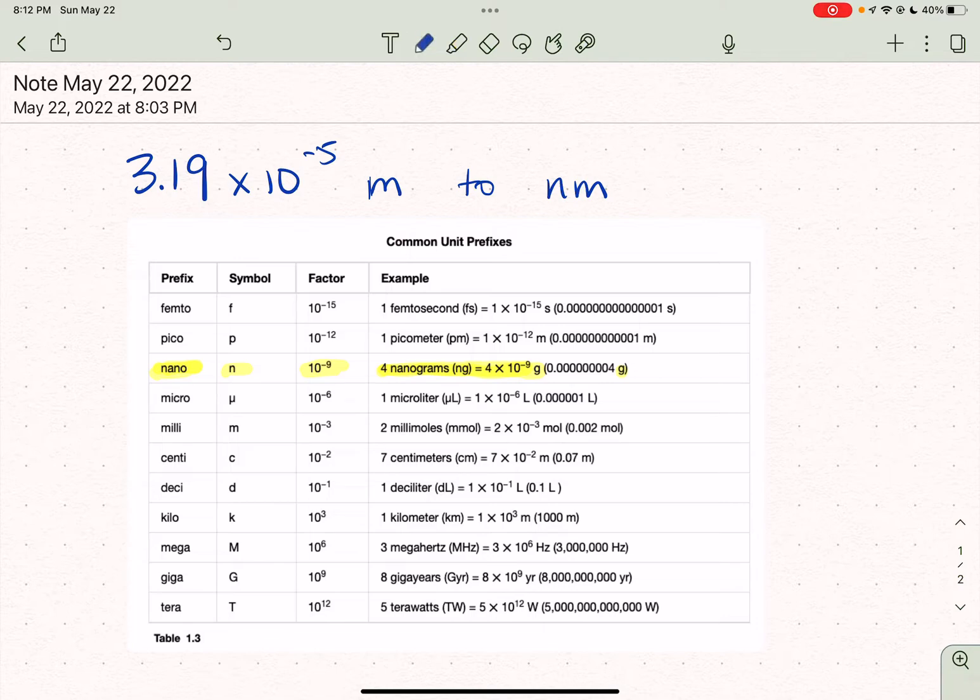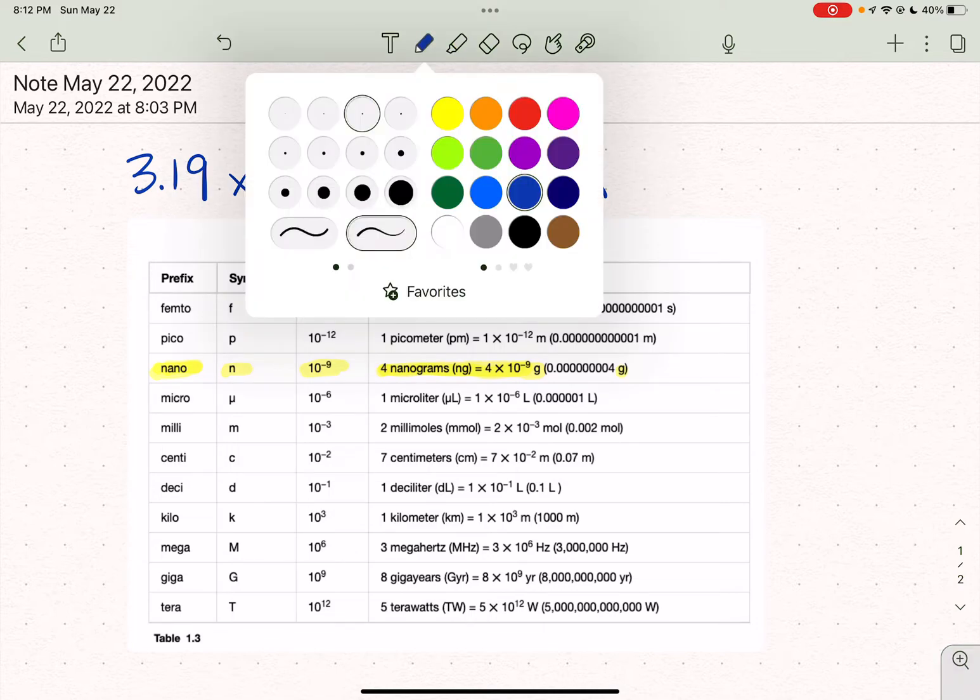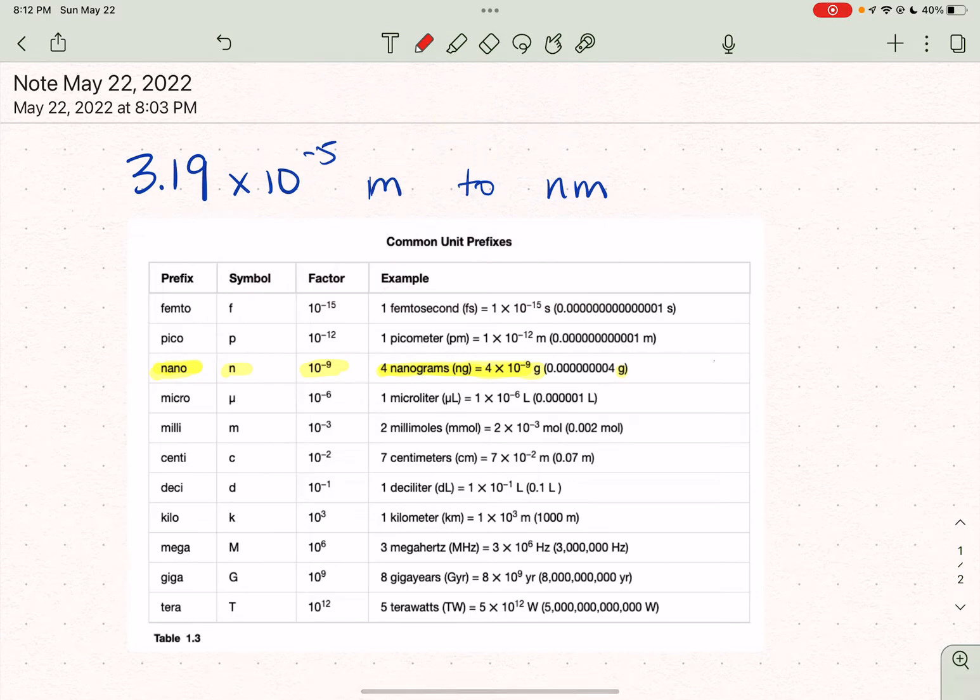So let's do this in two different ways. I'm going to use red to show you that 1 times 10 to the 9 nanograms is equal to 1 gram.